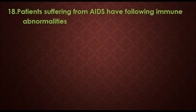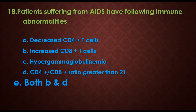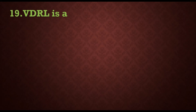Question 18: patients suffering from AIDS have the following immune abnormalities — options are: a) decreased CD4 T cells (cluster differentiation 4), b) increased CD8+ T cells, c) hypergammaglobulinemia, d) CD4 to CD8 ratio greater than 2:1, e) both b and d. The answer is e) both b and d — patients with AIDS have increased CD8 T cells as well as a CD4 to CD8 ratio greater than 2:1.